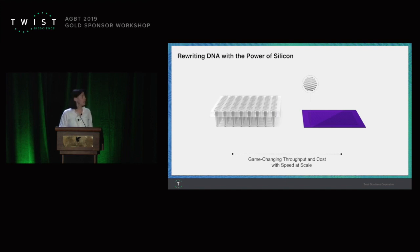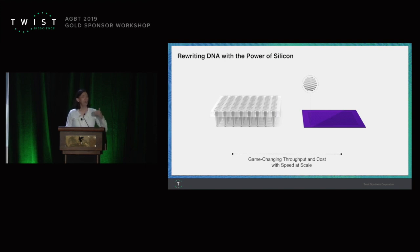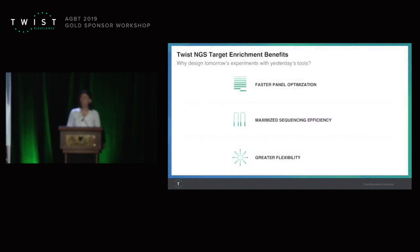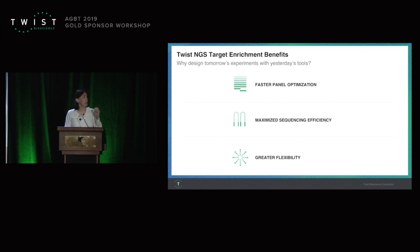What I'll talk about today is around three themes. The first theme is fast optimization, which means that once you have an idea, you can get your first data in a few weeks, so that you know if it's the right direction for your science. I'll talk a little bit about sequencing efficiency, and our goal is to enable you to get the data you need with the least amount of sequencing possible, so that you can have the lowest cost per sample possible.